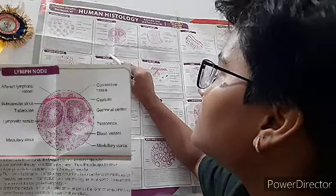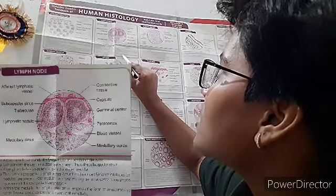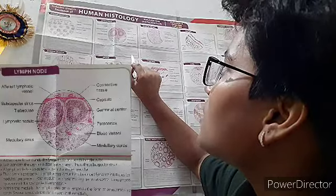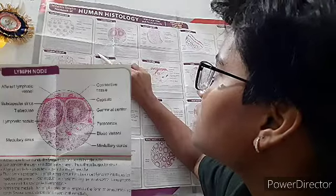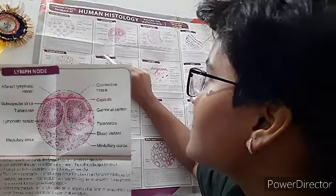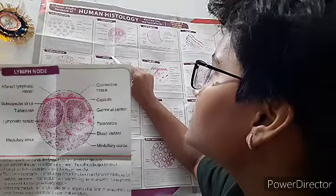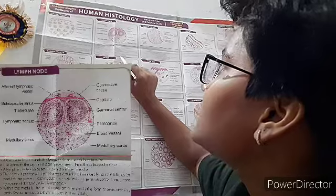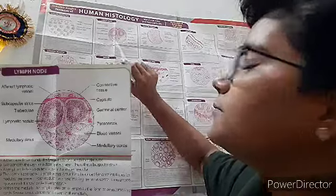Within the medulla, the lymphocytes are arranged in the form of anastomosing cords. Several blood vessels can be seen in the medulla.